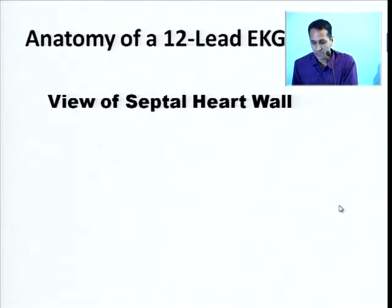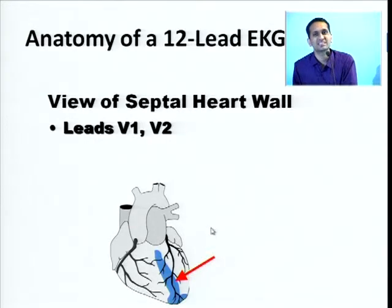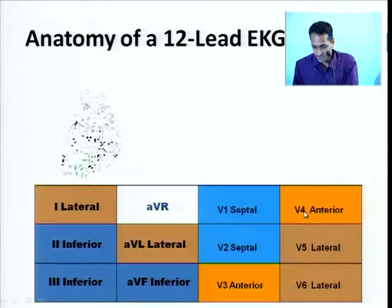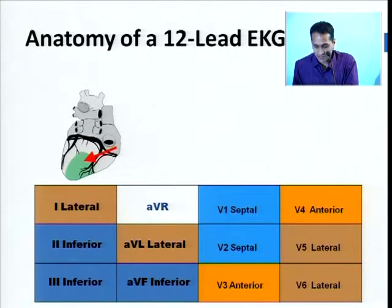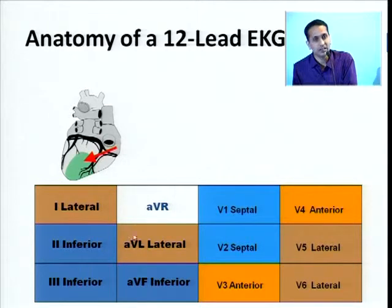Changes only in V1 and V2 are called the septal leads — so ST depression or elevation in V1 and V2 is a simple septal infarct. This table summarizes the entire story: the inferior territory is 2, 3, AVF; V1-V2 is septal; V3-V4 is anterior; 1 and AVL is high lateral; V5-V6 is low lateral.